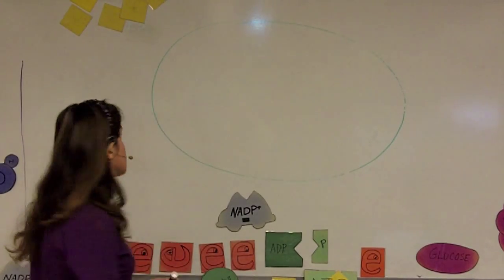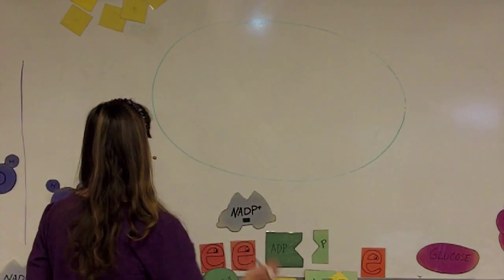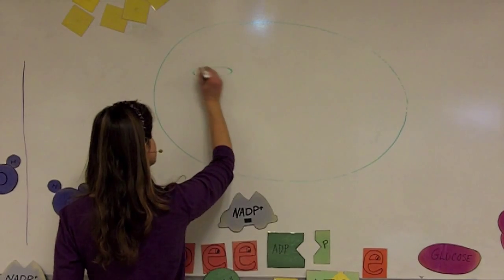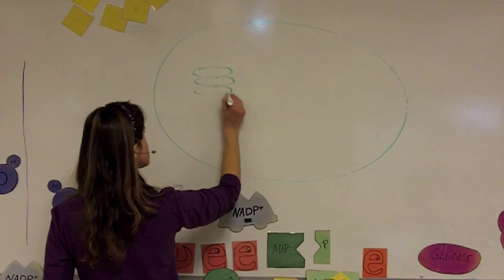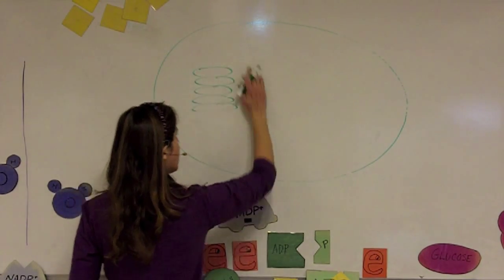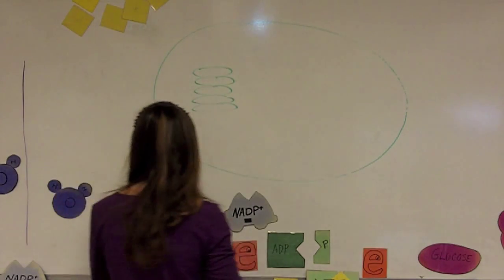Here is the chloroplast located in the cells of the plant. Inside the chloroplast, you've got the thylakoid membranes and the solution outside, which is the stroma.